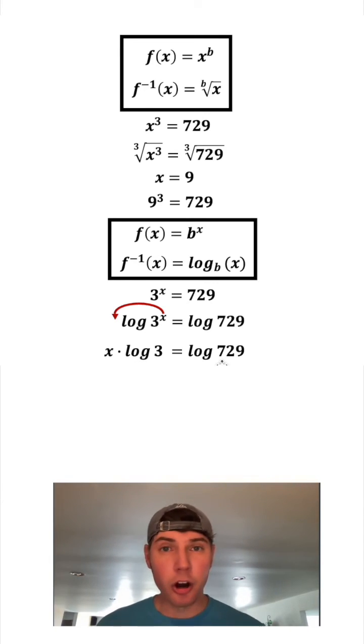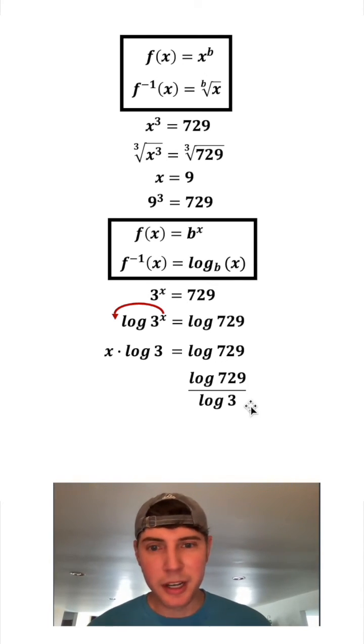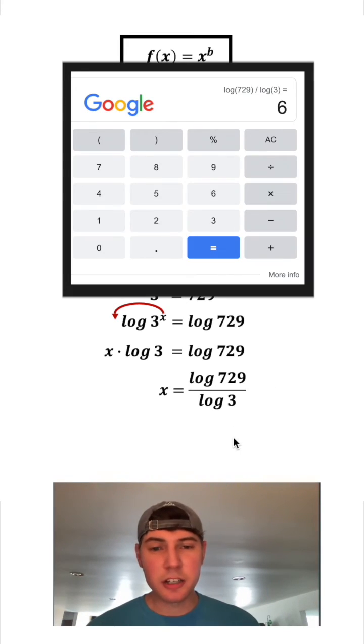So we can divide both sides by log 3. So on the right hand side, we'll have log 729 divided by log 3. And on the left hand side, since we're dividing by log 3, it's just an x. We can plug this into a calculator. Log 729 divided by log 3 ends up being equal to 6.